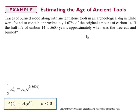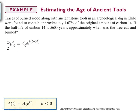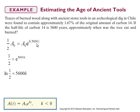To solve this, we write A = A₀e^(kT). For half-life, A = ½A₀ when T = 5,600 years. Dividing both sides by A₀, taking the natural log, and dividing by 5,600 gives k = ln(½) / 5600, which equals −ln(2) / 5600 ≈ −0.000124.